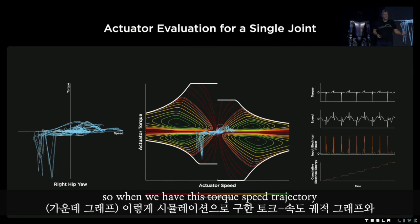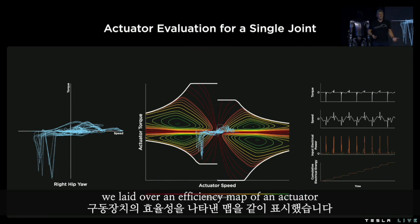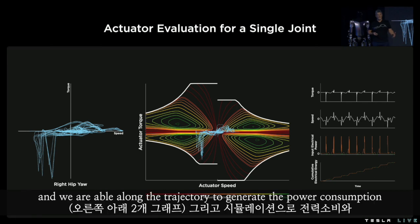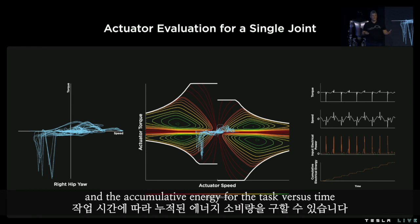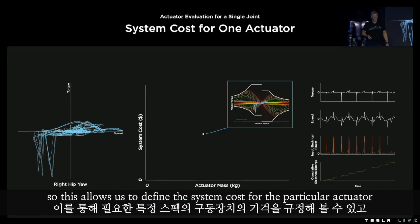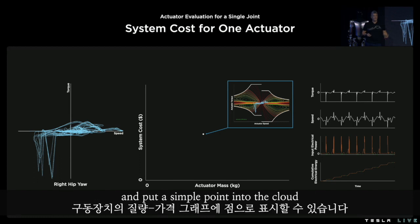When we have this torque-speed trajectory, we lay it over an efficiency map of an actuator, and we are able to generate, along the trajectory, the power consumption and the cumulative energy for the task versus time. This allows us to define the system cost for the particular actuator and put a single point into the cloud.